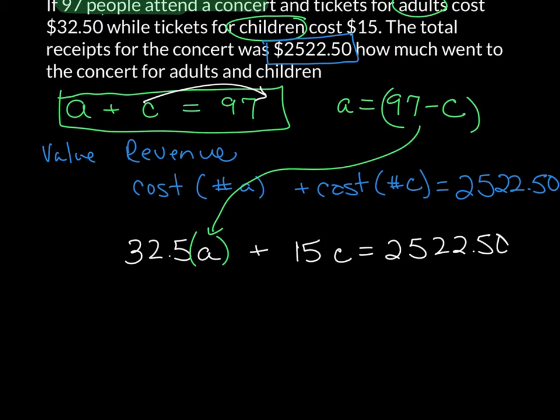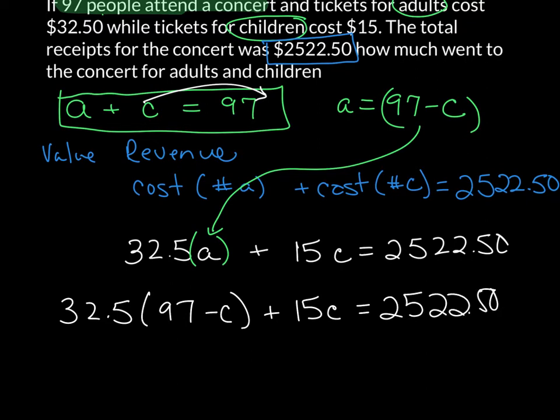And now, I have 32.5 times (97 minus C) plus 15C is equal to 2522.50. I'll now multiply this out.